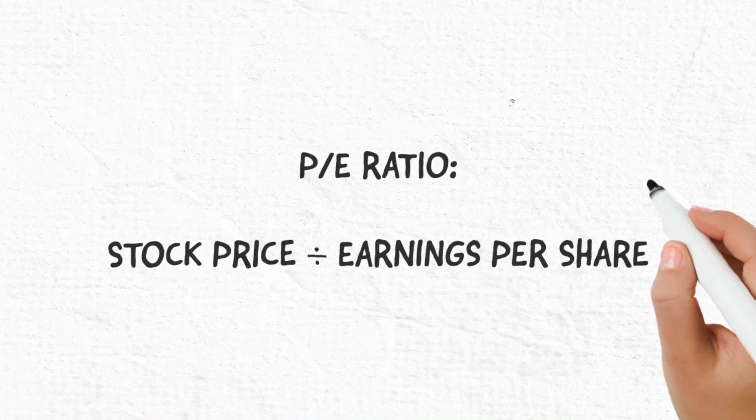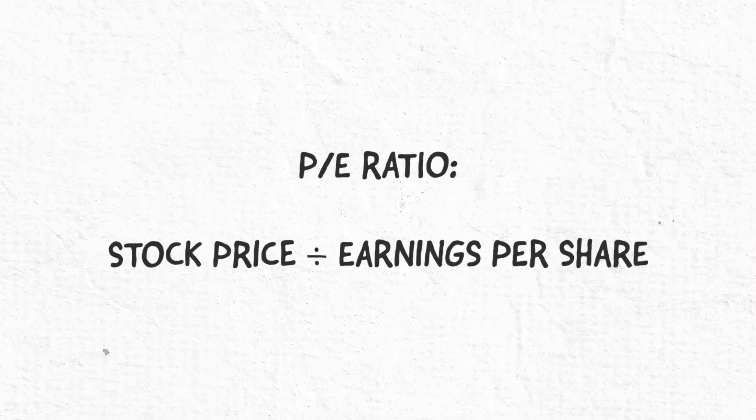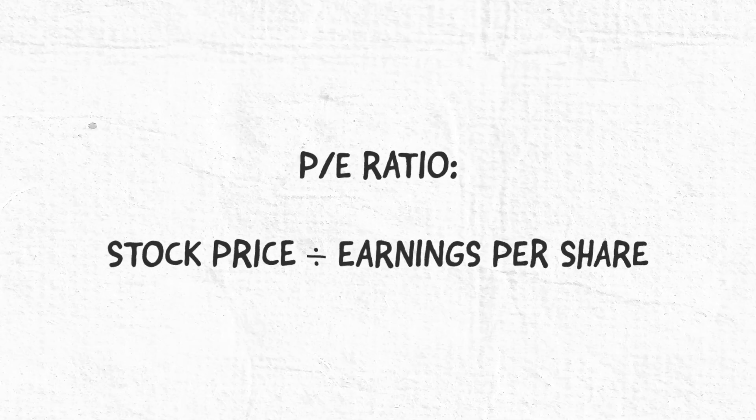For example, if a company has a P/E ratio of 10, it means investors are willing to pay $10 for every dollar that the company earns in profit. The formula to calculate the P/E ratio is actually quite simple too — you take the stock price and you divide that by the earnings per share. So let's take a look at a historical example and calculate the P/E ratio.